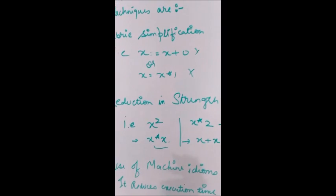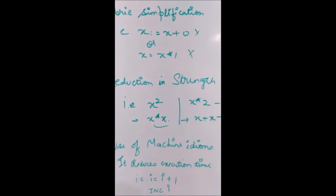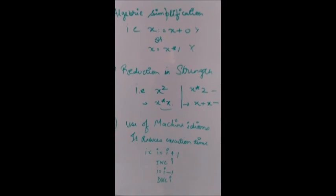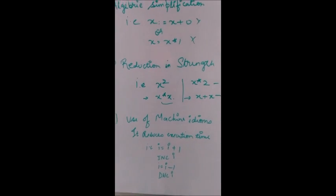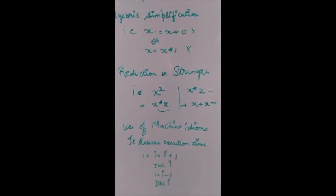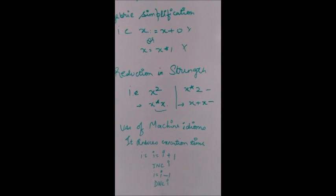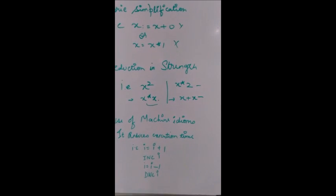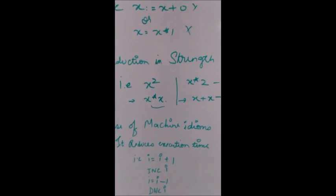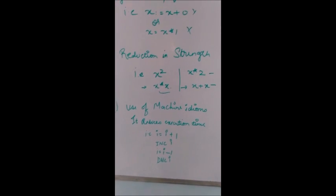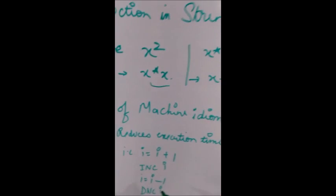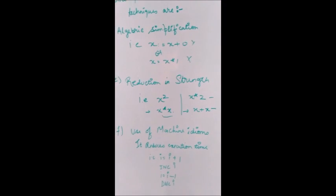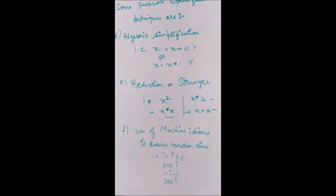The final technique is use of machine idioms, which reduces execution time. There are some instructions specific to a particular machine, like increment or decrement. These machine-specific functions are used to improve the code — for example, 'i = i + 1' can be replaced with 'increment i'. This covers all the peephole optimization techniques. Thanks for watching, and do subscribe.